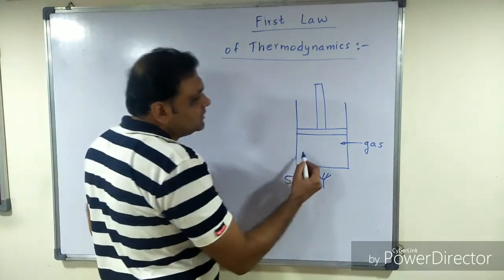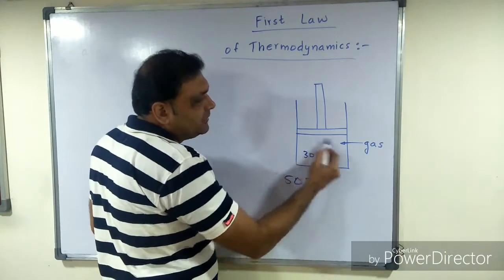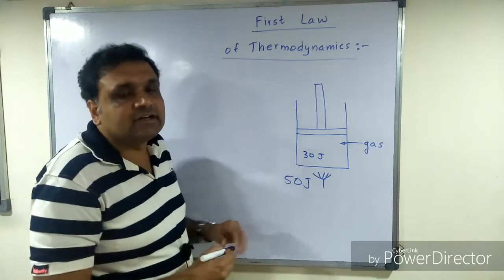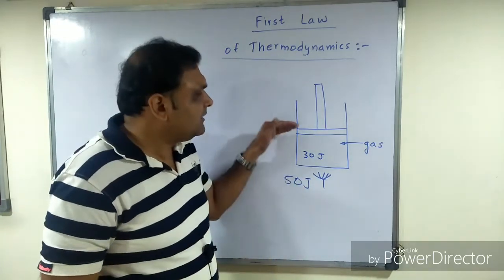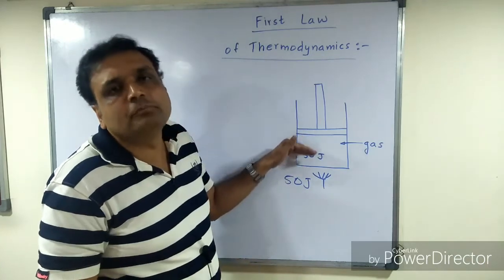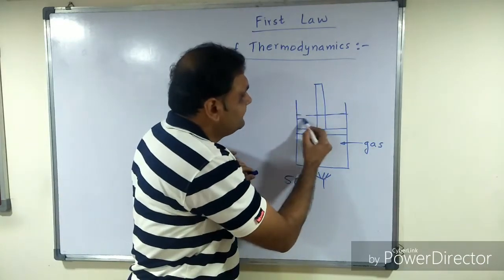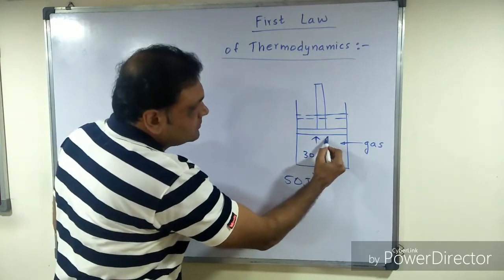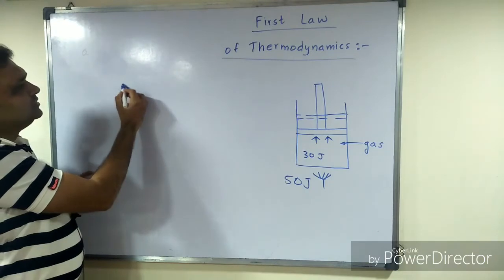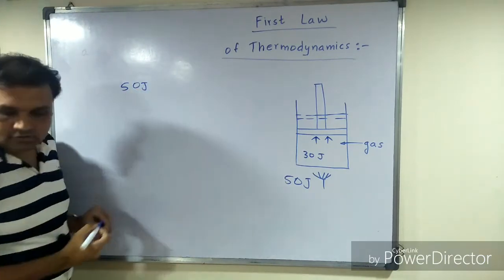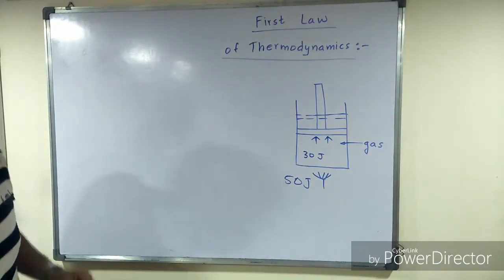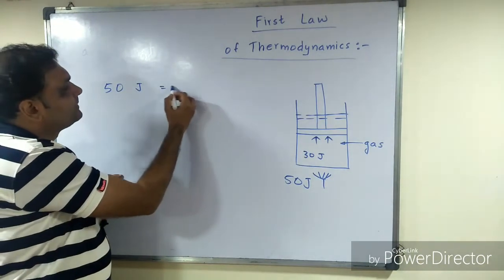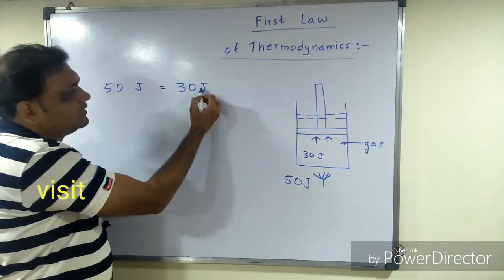That's the internal energy increase in the gas, and 20 joules is used to push the piston to a new height. So I will write mathematically: 50 joules equals 30 joules plus 20 joules. 50 joules is the heat supplied or heat given. 30 joules is the internal energy increase in the gas.